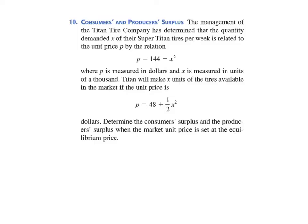Here's problem 10 from page 476. The management of the Titan Tire Company has determined that the quantity demanded x of their Super Titan tires per week is related to the unit price by this relation: p equals 144 minus x squared. This is the demand function. Notice p is measured in dollars but x is measured in units of a thousand, and that's going to be a big deal when we get done—we're going to multiply by a thousand.